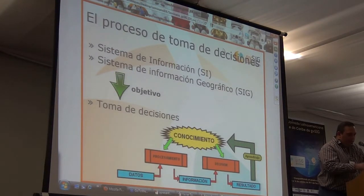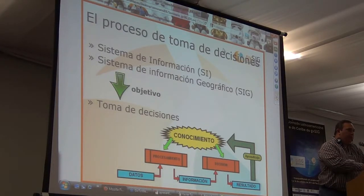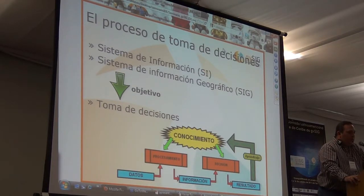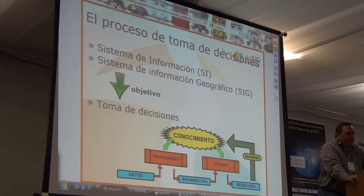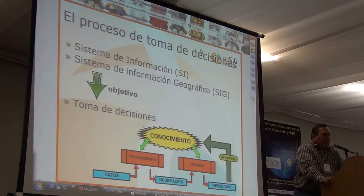No creo que alcancemos a verlo acá en esta presentación, pero podemos consultar algún detalle que podamos ver operativamente en la máquina, podemos ver luego con todo gusto. En el proceso de toma de decisiones debemos tener presente que estamos manejando un sistema de información, y que en este caso el origen está en un sistema de información geográfico, pero siempre estamos hablando de sistemas de información.